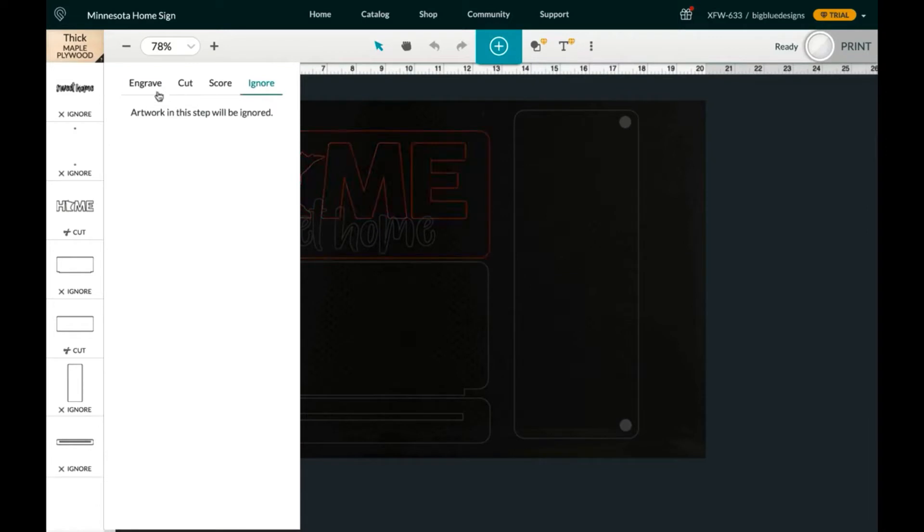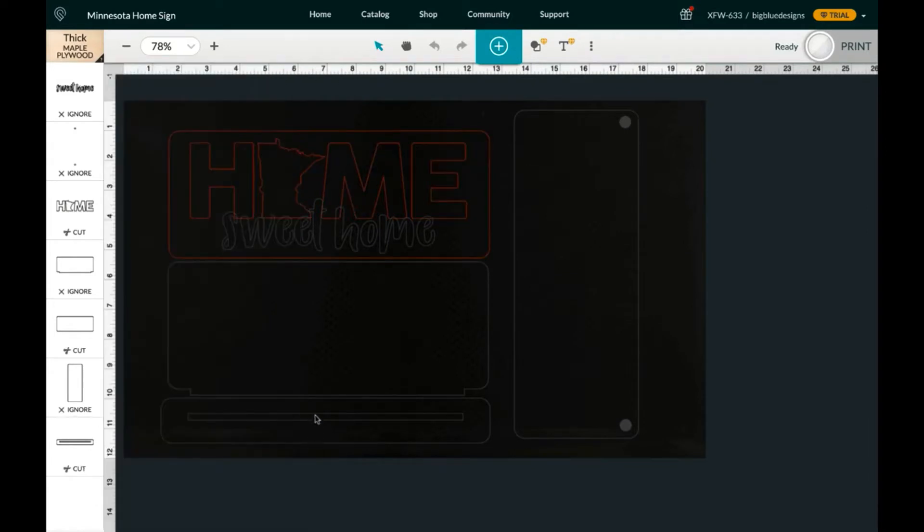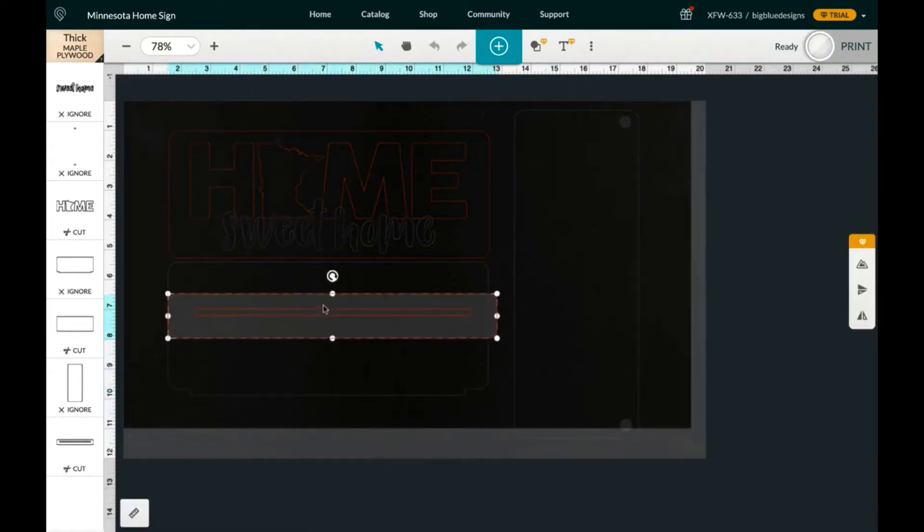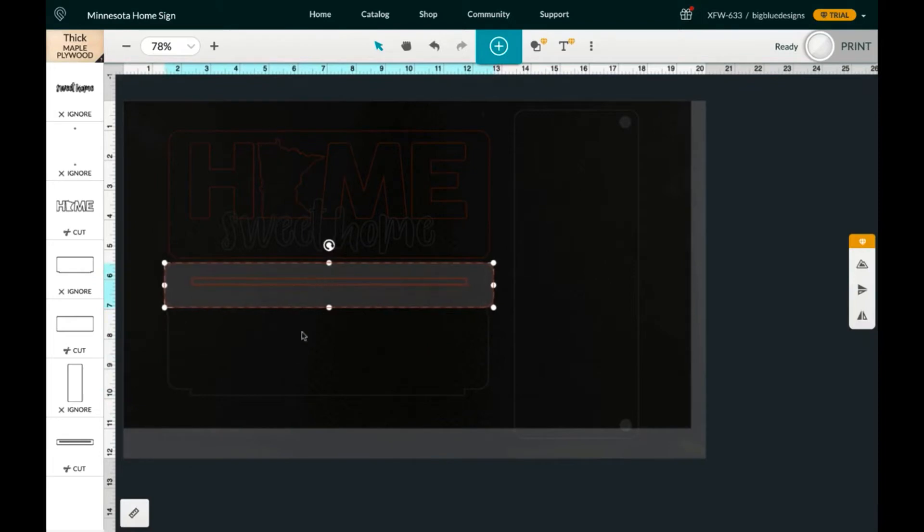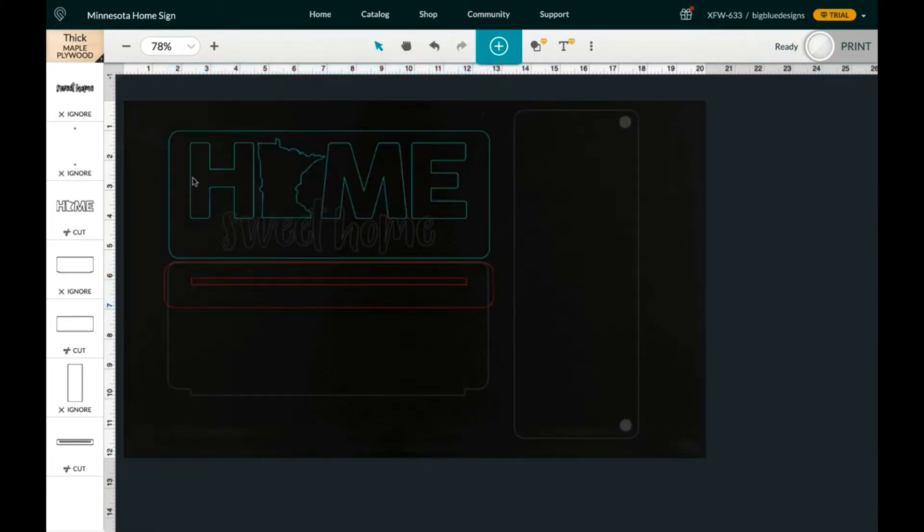And then the base. You can move these around wherever you need to to get it on your material, but those are the pieces I'm going to cut from the walnut: the home and then the base.